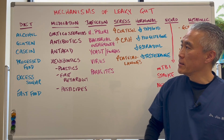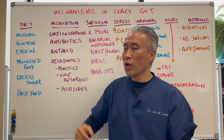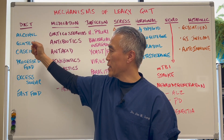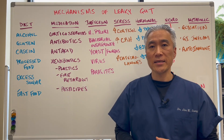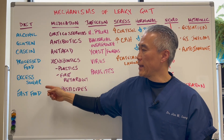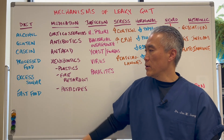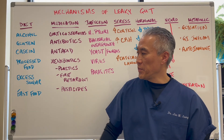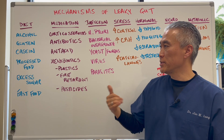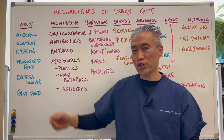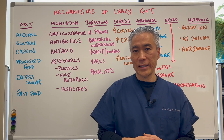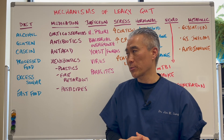Number one would be diet. Alcohol or excessive alcohol consumption can create damage to the gut lining. Gluten protein, dairy or casein, processed foods, excessive sugar, or fast food — basically, fast food encompasses all of that, right? It has gluten and dairy, processed foods, and a lot of sugar. So these types of things in excess will create leaky gut syndrome or intestinal permeability.